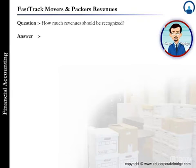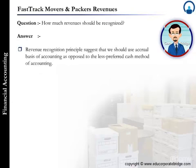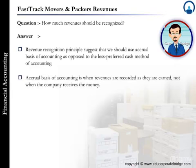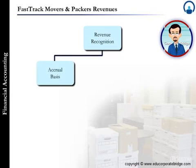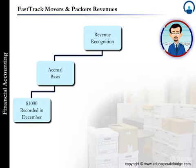The main revenues for Fast Track are the fees it earns for delivering parcels. The revenue recognition principle suggests we should use the accrual basis of accounting, as opposed to the cash method. Accrual basis means revenues are recorded as they are earned, not when the company receives the money. Therefore, the $1,000 must be recorded as December revenues, since that is when the delivery work actually took place.